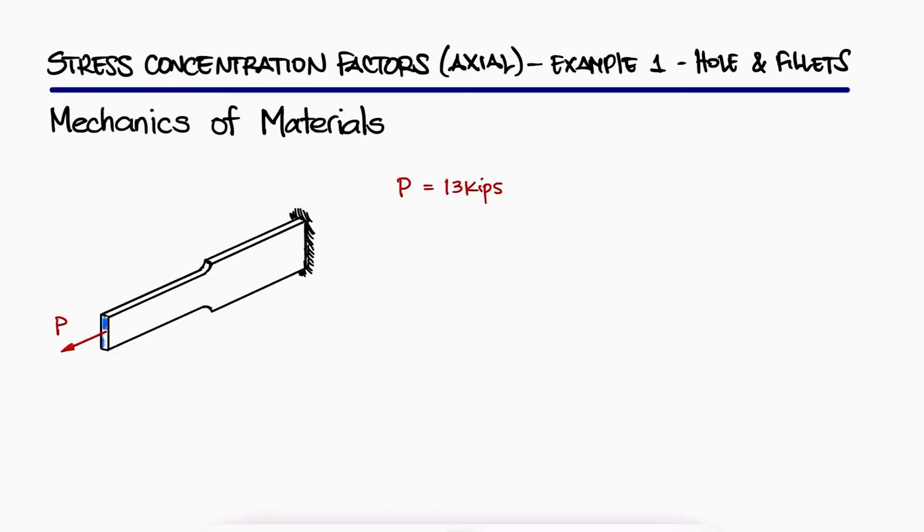For an external axial load P of 13 kips and a hole diameter of a half inch, what is the maximum stress in the plate and would removing the hole change it?